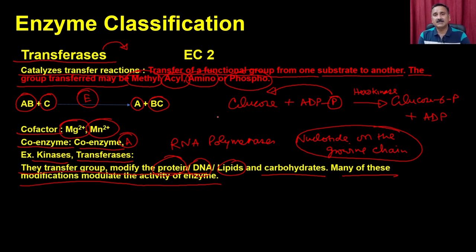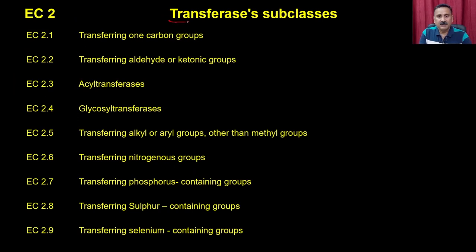Transferases are a very large group. Within this class, different types of enzymes transfer groups onto proteins, DNA, lipids, or carbohydrates, thereby changing the properties of those molecules. For example, when enzymes are phosphorylated, their catalytic activity changes — phosphorylation can make an enzyme more active in some cases, and less active in others. Classical examples include pyruvate dehydrogenase and PFK1.